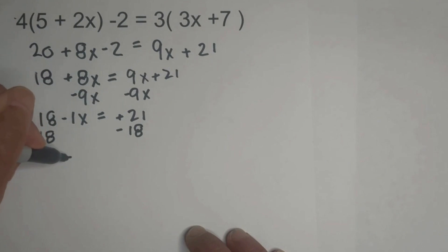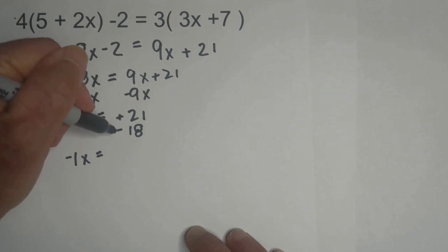So let's bring down the negative 1x, equals 21 minus 18, is 3.